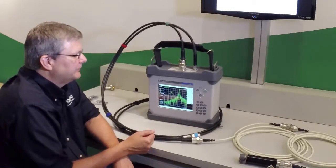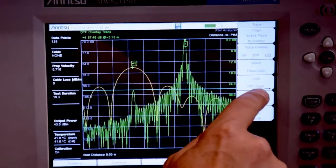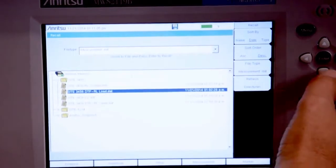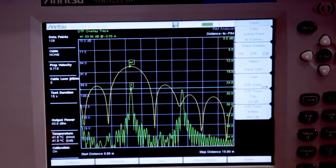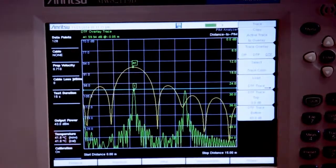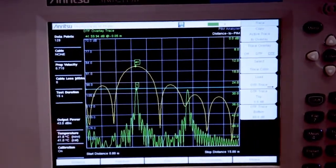In a closed antenna system, or a system where we think the PIM source is internal to the system, a more useful trace to load is the distance to fault trace where we had the precision load at the end of the cable. So here we use, once again, the high resolution of the cable and antenna analyzer mode and see a very clear picture showing us exactly where each connector is.